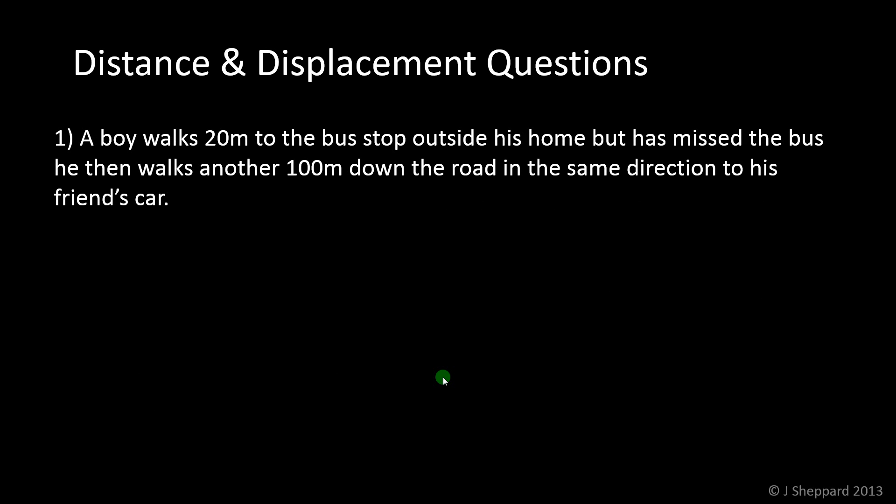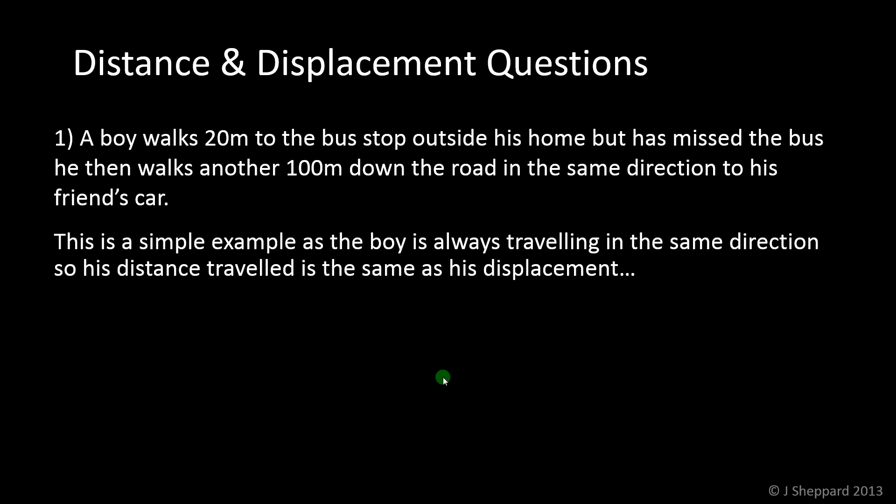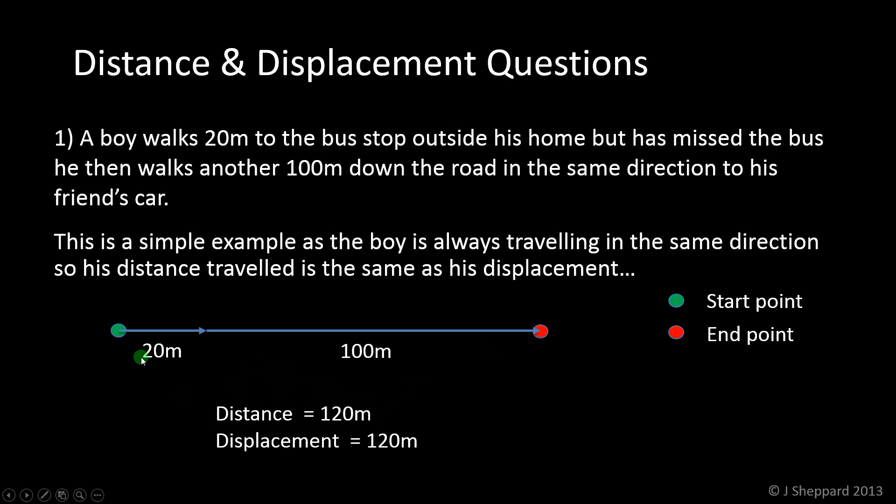Number 1. A boy walks 20 metres to the bus stop outside his home, has missed the bus, he then walks another 100 metres down the road in the same direction to his friend's car. So, it's often a good idea to try and picture or draw a diagram for lots of problems in physics, and this is no exception. Because he's always travelling in the same direction, it's quite a simple one, but if we look at it, he moves from, if you use a little green blob for the starting point here, he moves 20 metres in the first part of the description, and he moves another 100 metres in the same direction to his end point, which is the little red blob. So, his distance travelled is 120 metres, and because he's going in the same direction, his displacement is 120. We could say plus 120 there, really, we should say. But they're the same, because he's moving in the same direction. So, a simple one to start with.